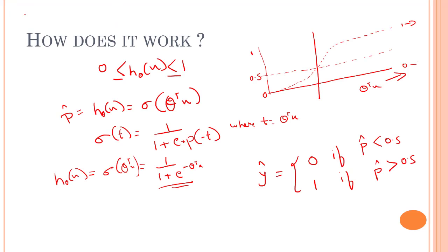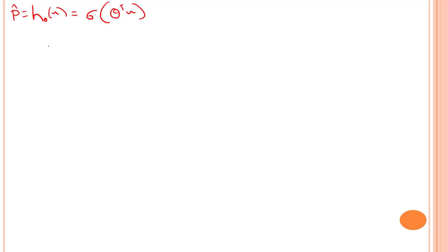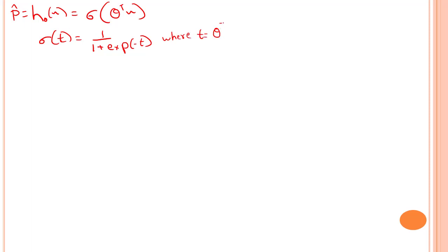If we have to denote the value in terms of sigmoid, it is 1 divided by 1 plus exp of minus t, where t is nothing but θ transpose x.